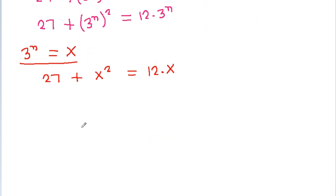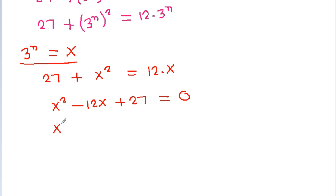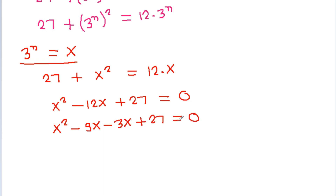Rearranging, x squared minus 12x plus 27 is equal to 0. We split the middle term: x squared minus 9x minus 3x plus 27 is equal to 0.